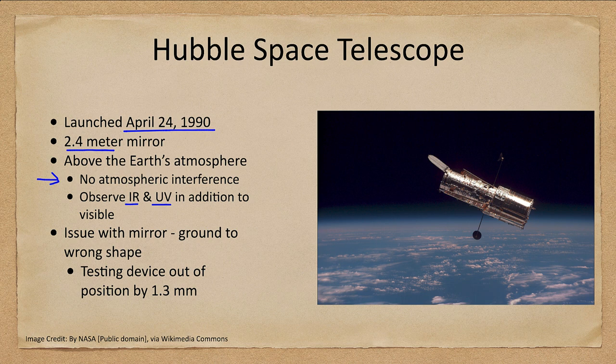You can't observe high-energy types of light like X-rays or gamma rays with a standard mirror — those require completely different styles of telescopes, as a mirror will not reflect them.